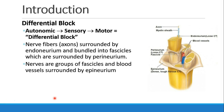We need to understand the concept of differential block, which states that different types of nerves are going to be more or less susceptible to blockade from local anesthetics. Autonomic fibers tend to get blocked first, then sensory, and then lastly the motor fibers. To understand this, we should first look at the anatomy of a nerve. A nerve fiber, or an axon, is surrounded by...